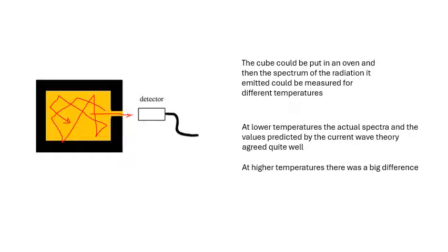Now at low temperatures, there was wave theory at the time, the theory about electromagnetic radiation where you could predict what the spectrum would be. And at lower temperatures, up to four or five hundred kelvin, the wave theory agreed with the experimental evidence quite well. But at higher temperatures there was a big difference.